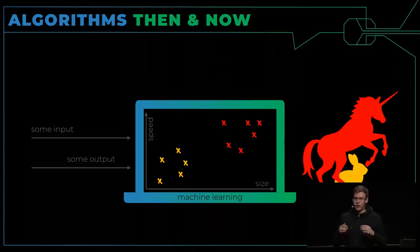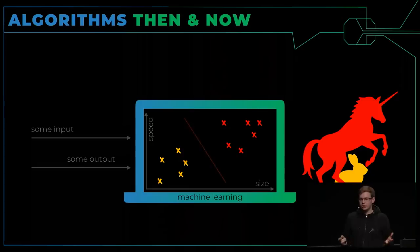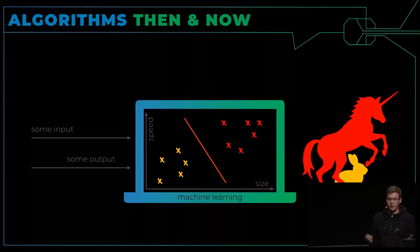First thing I need is some training data, some input. The input here are just pairs of speed and size. What I also need is information about the desired output, the class being either unicorn or rabbit. Let's try to find a statistical model which we can use to separate this feature space into two halves, one for the rabbits, one for the unicorns. Our statistical model in this case is just a straight line. The learning process is to find where in this feature space the line should be, ideally right in the middle between the two classes.